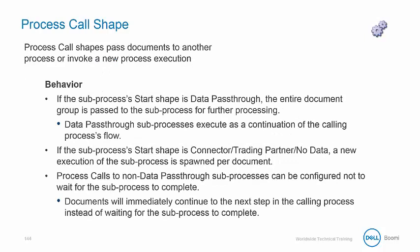The process call shape passes documents to another process or invokes a new process execution. If the subprocess start shape is data passed through, then the entire document group is passed to the subprocess for further processing. If the subprocess start shape is a connector, trading partner, or no data, then a new execution of the subprocess is spawned per document. Process calls to no-data pass-through subprocesses can be configured not to wait for the subprocess to complete — documents will immediately continue to the next shape in the calling process.